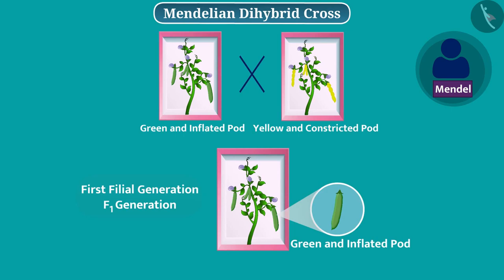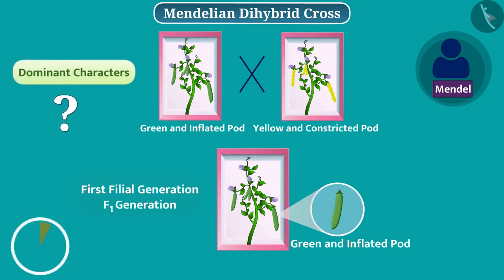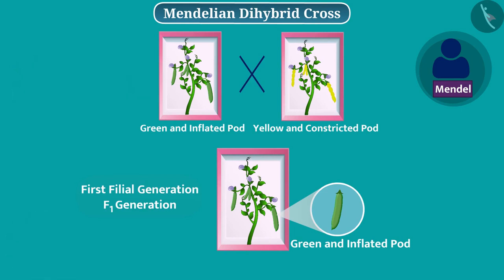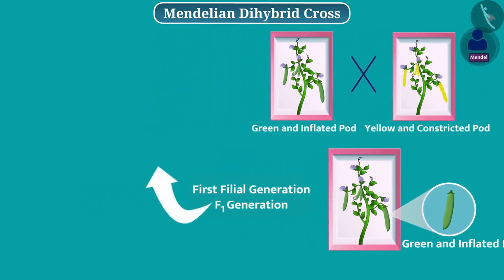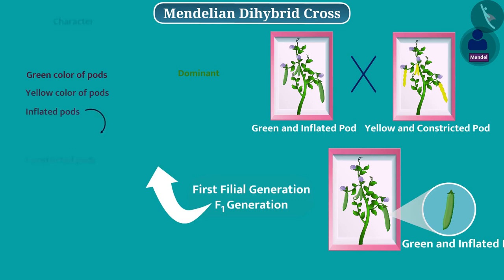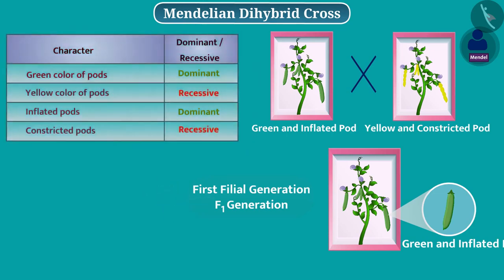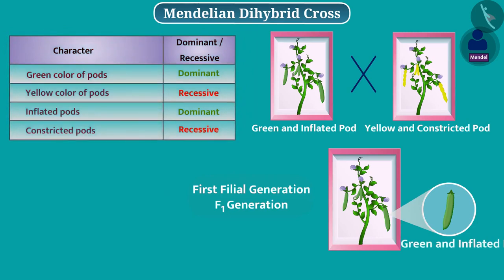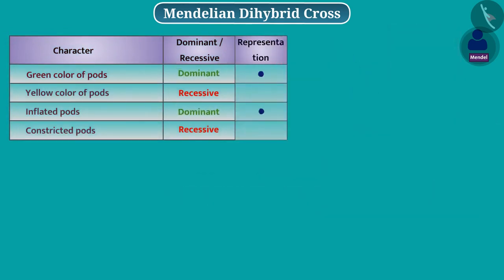Pause the video and identify dominant characters. In F1 generation, the green colour of pods was expressed, so this is dominant over yellow colour, and pods were inflated. That's why the inflated character is dominant over the constricted character. Yellow colour and constricted pods are recessive characters. We represent dominant characters by capital letter and recessive characters by small letter.